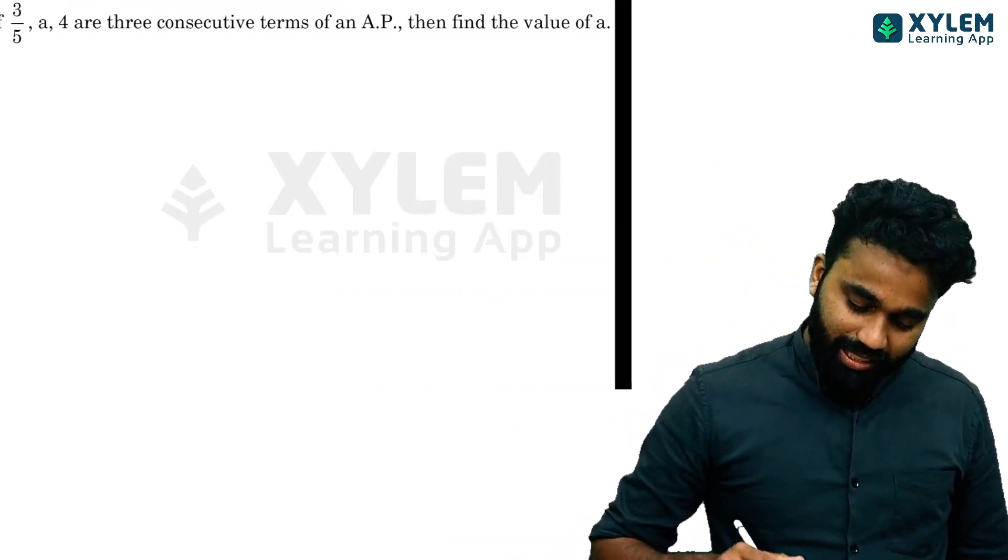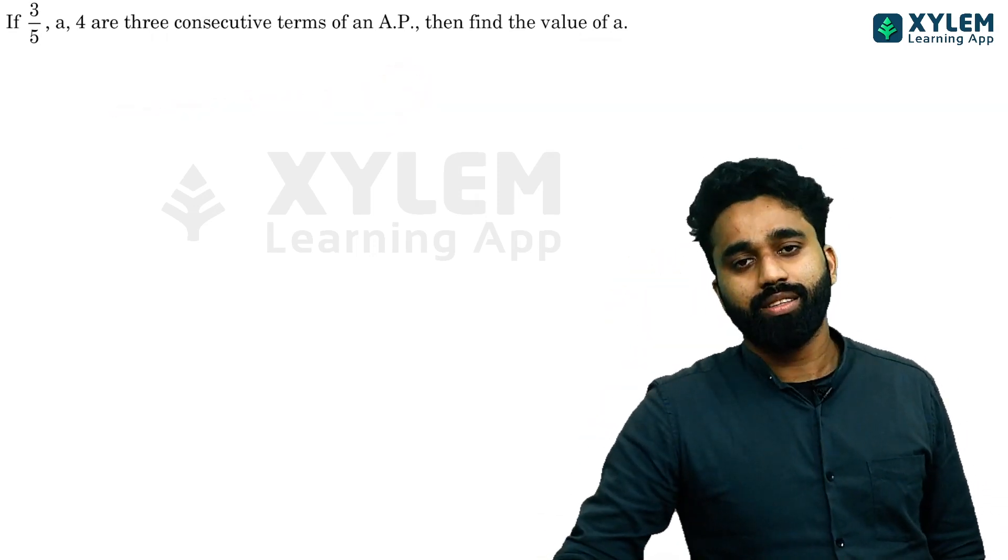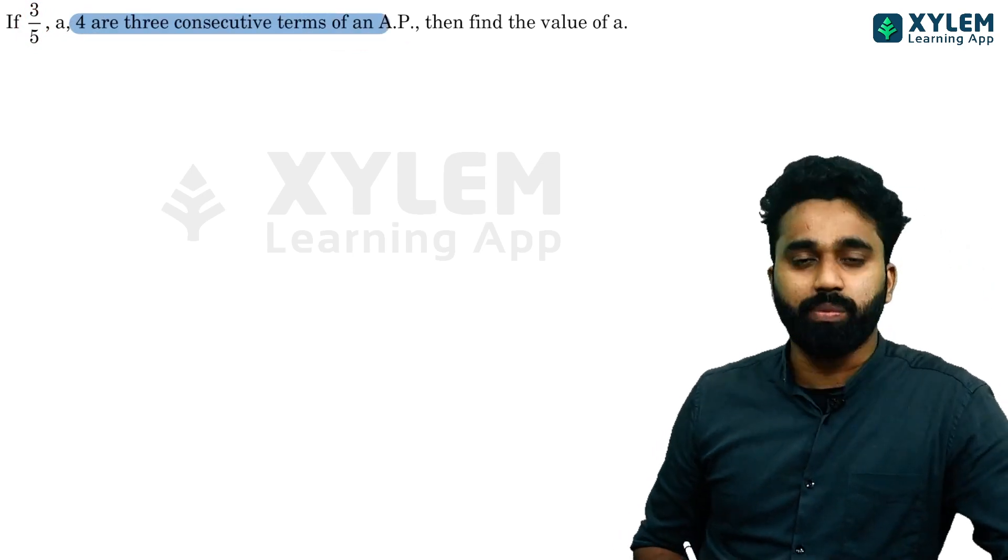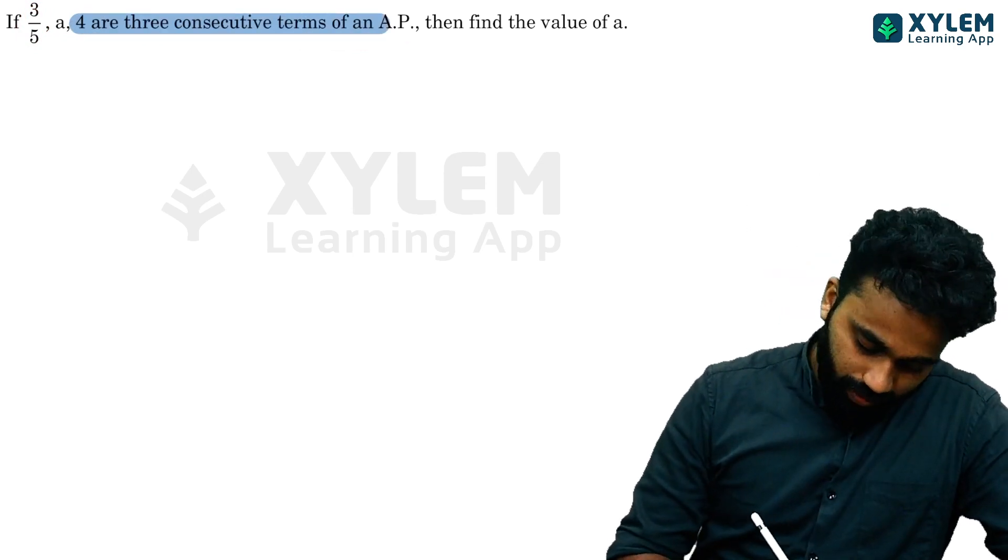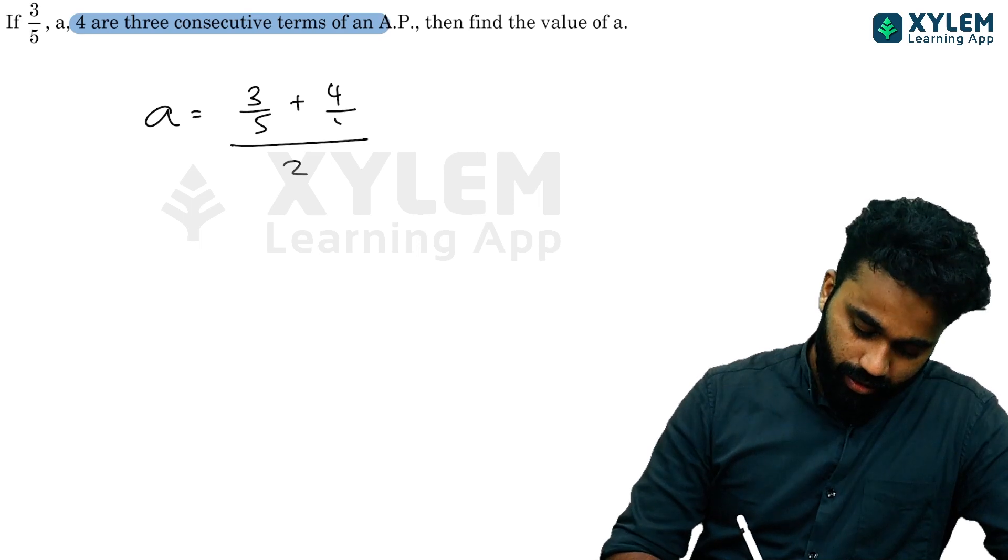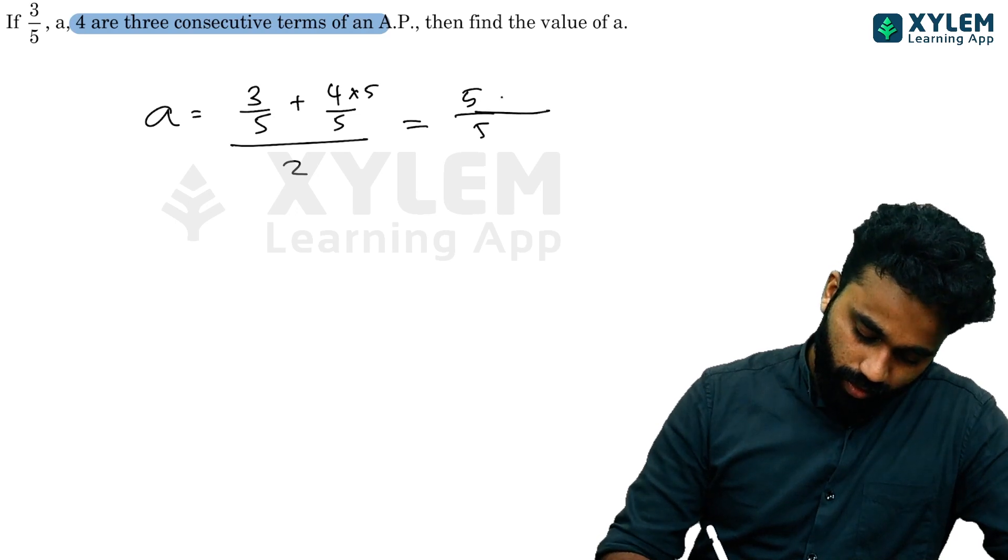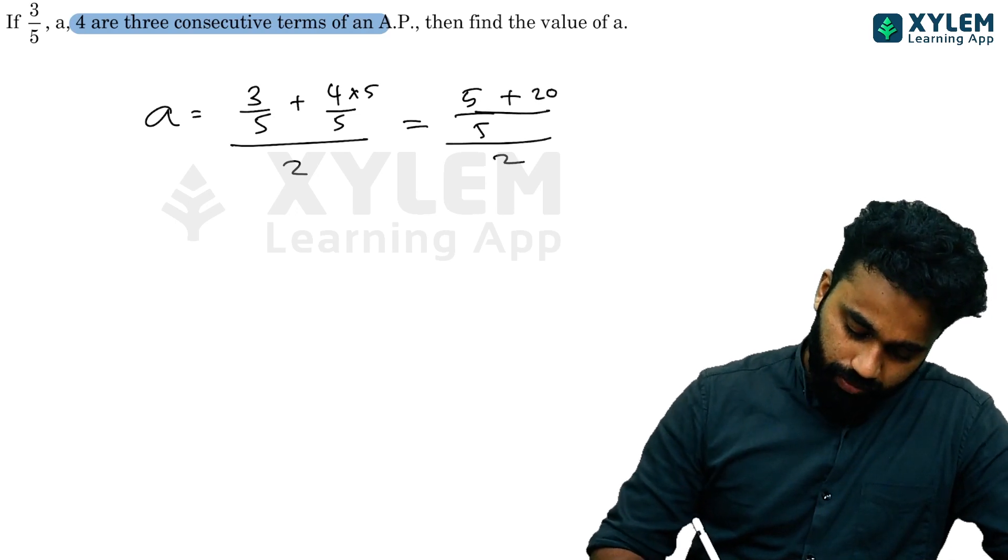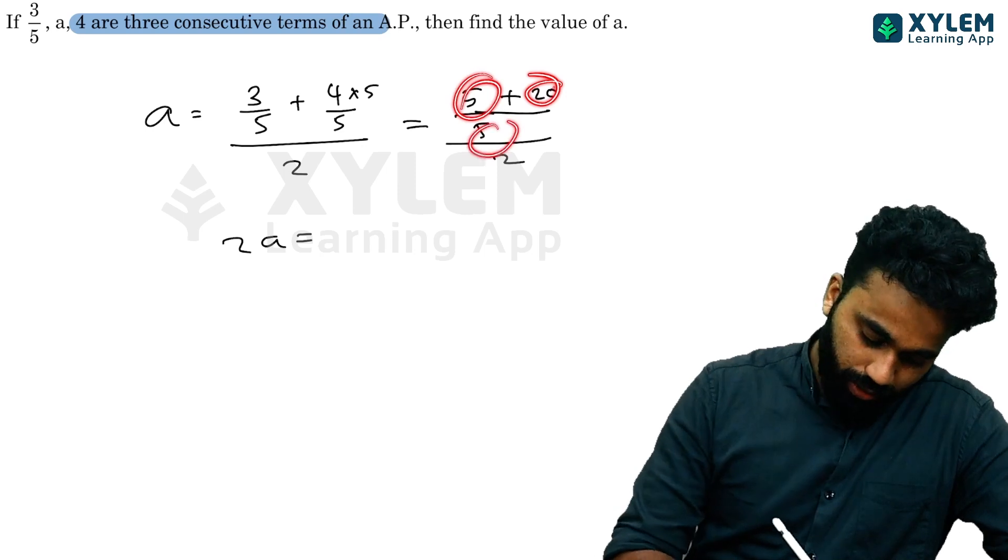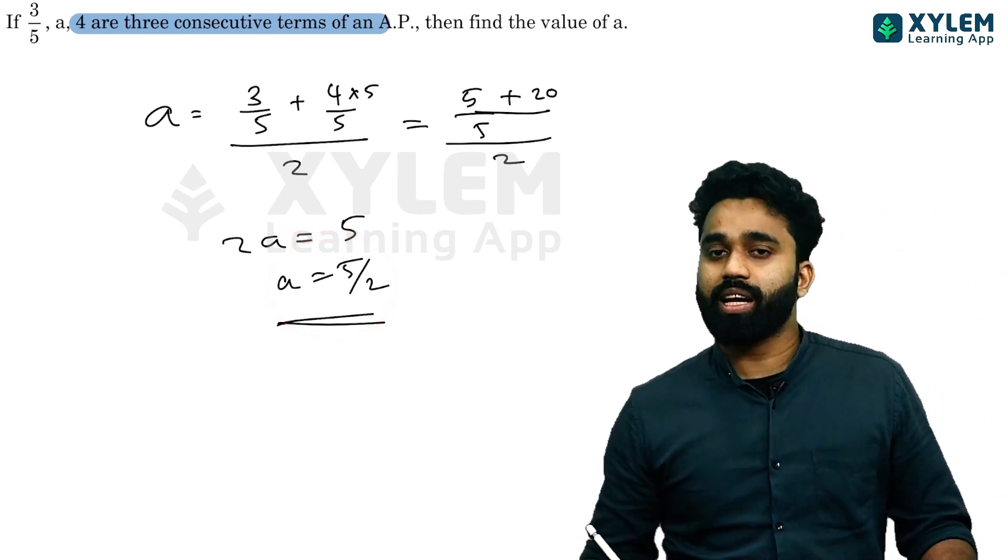If 3/5, a, and 4 are three consecutive terms of an AP, find the value of a. Using the formula: a equals first term plus last term divided by 2. So a equals 3/5 plus 4 divided by 2, which equals 3/5 plus 20/5 divided by 2. This equals 23/5 divided by 2, so a equals 23/10.